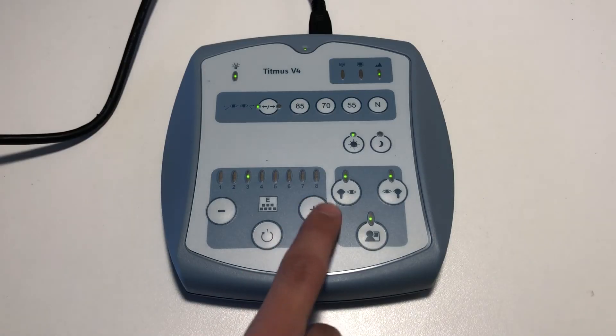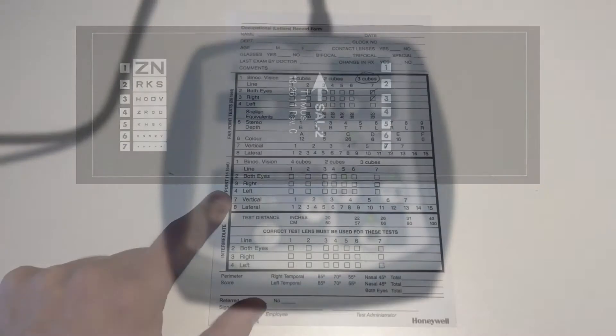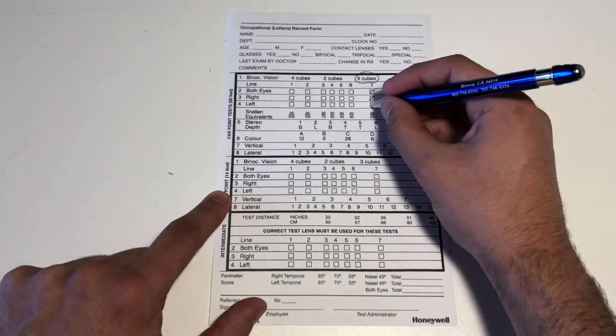Advance the slide to number four. This slide is the same as the previous, but for the left eye. Mark the results in the left answer box under far test.